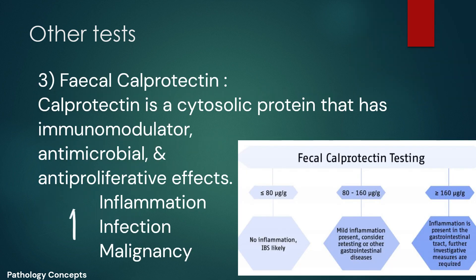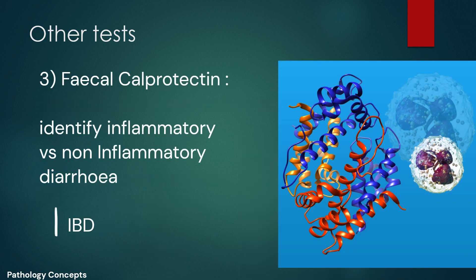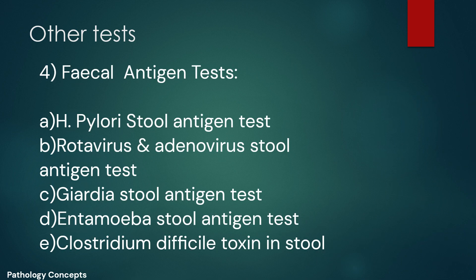Fecal calprotectin is a cytosolic protein that has immunomodulatory, antimicrobial, and anti-proliferative effects. The intensity of calprotectin increases in infection, inflammation, and malignancy. It is a zinc and calcium binding protein generally released by neutrophils and monocytes. In intestinal inflammation, the levels of fecal calprotectin increase, making it useful to differentiate inflammatory causes of chronic diarrhea from non-inflammatory causes. Fecal calprotectin increases in inflammatory bowel diseases.